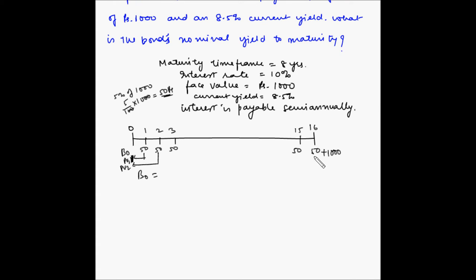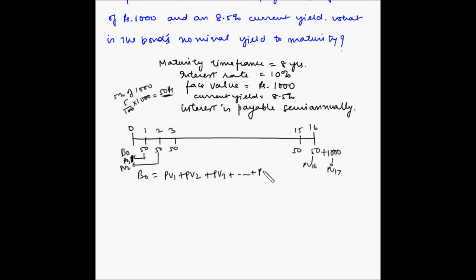We will have PV1 through to PV16 for the interest payments, and PV17 for the maturity value. So the present value of the bond equals PV1 plus PV2 plus PV3, and so on, plus PV15 plus PV16 plus PV17.